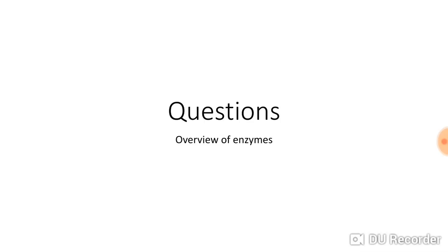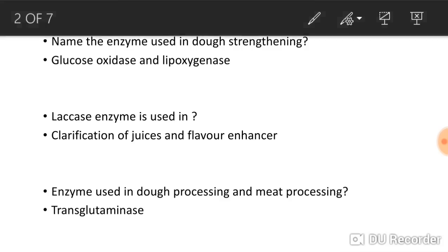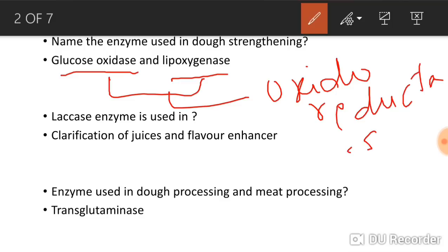The first question: name the enzyme used in dough strengthening. The enzymes used in dough strengthening are glucose oxidase and lipoxygenase. You have to memorize the names of enzymes for objective type questions in the exam. Both of these enzymes belong to the same class, which is oxidoreductase. One more enzyme also belongs to this class — that is laccase.